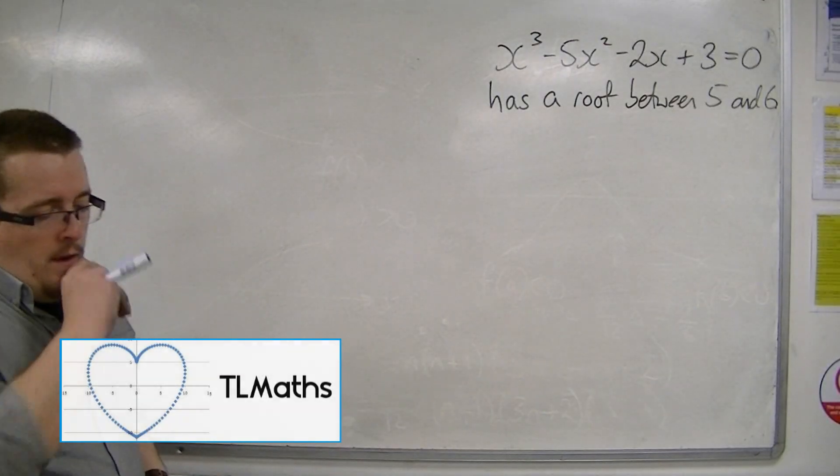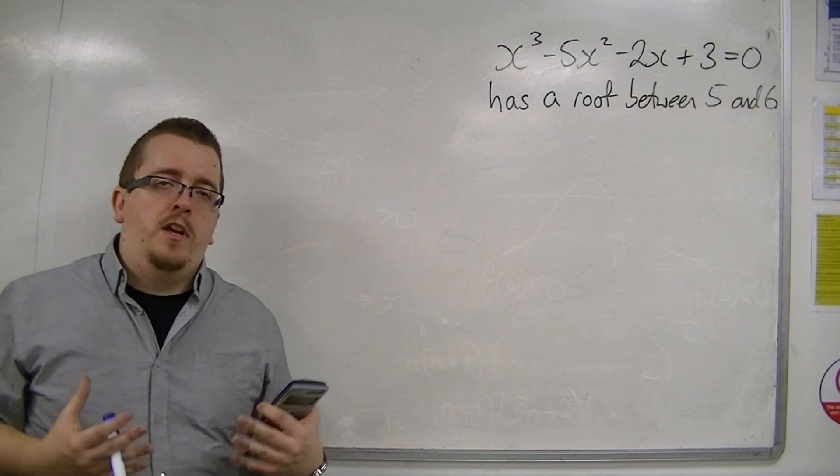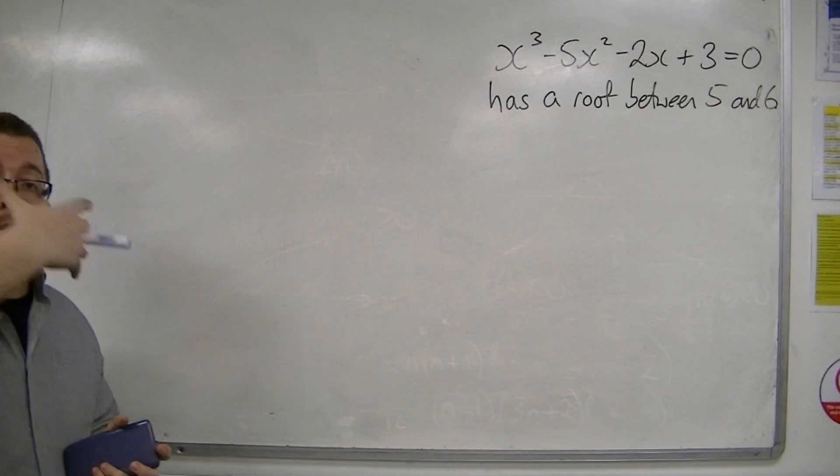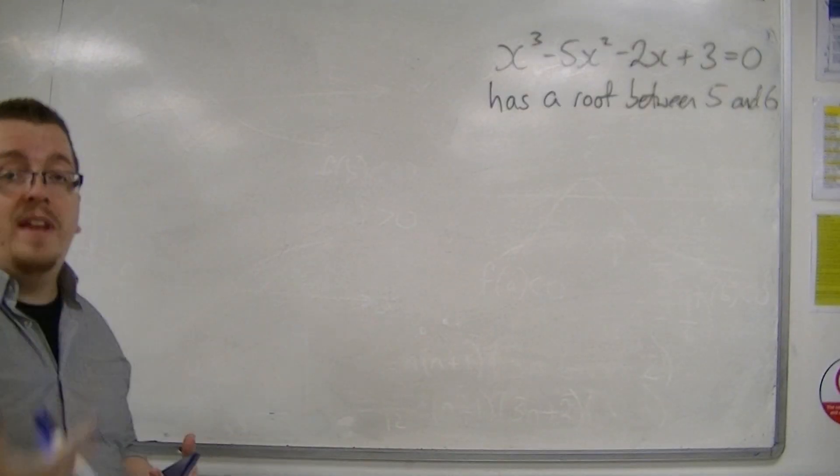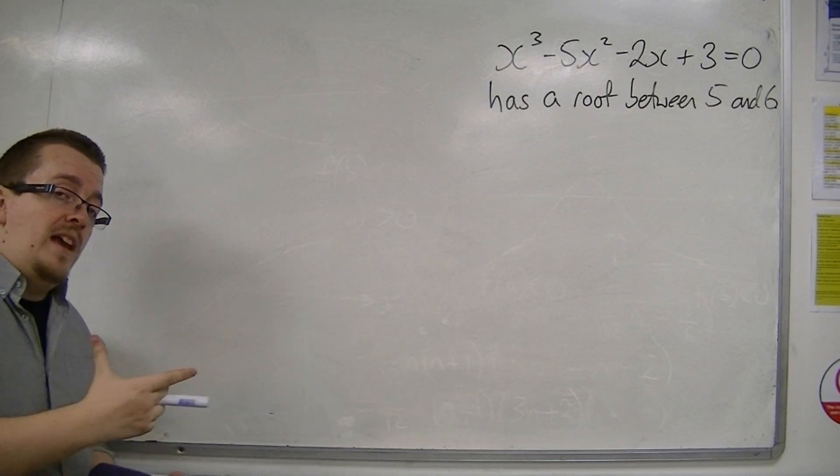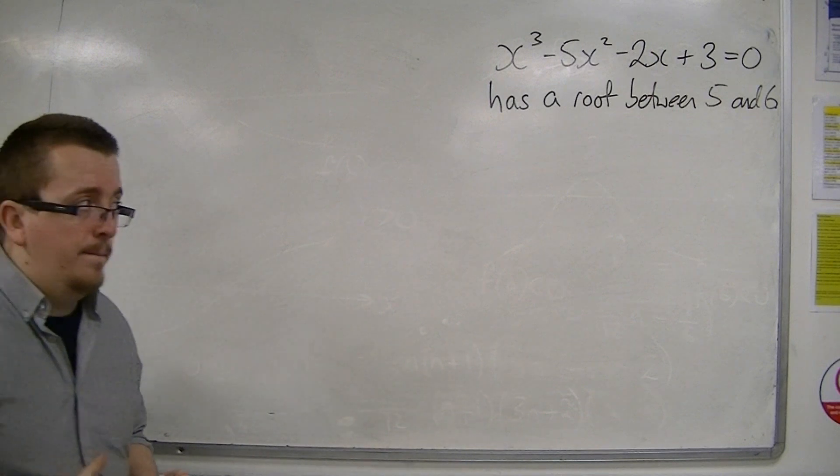In the previous video, I showed that if we were trying to locate a root and we found that substituting in two values where one was positive and one was negative, or the values that we got, one was positive and one was negative, it didn't matter which way around. We definitely could say that there was a root between those two values that we're substituting in.